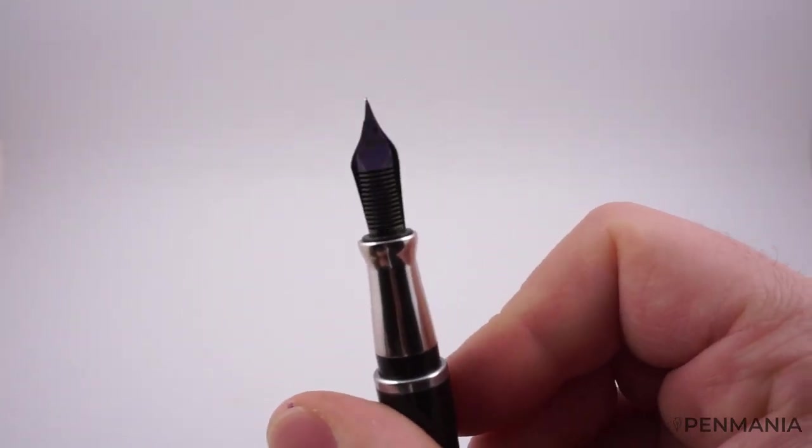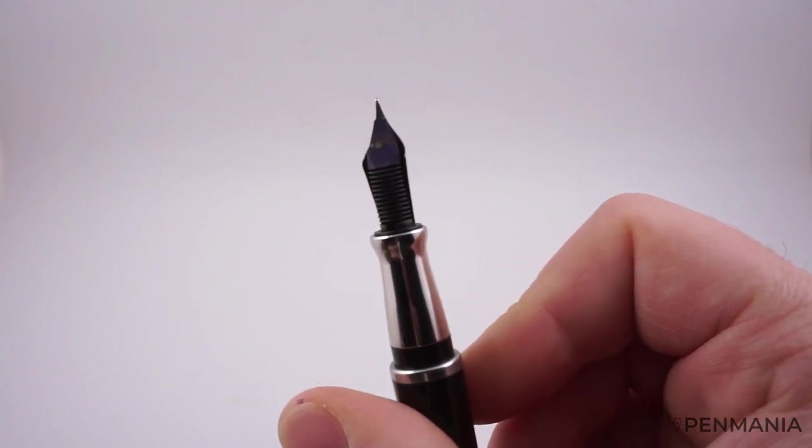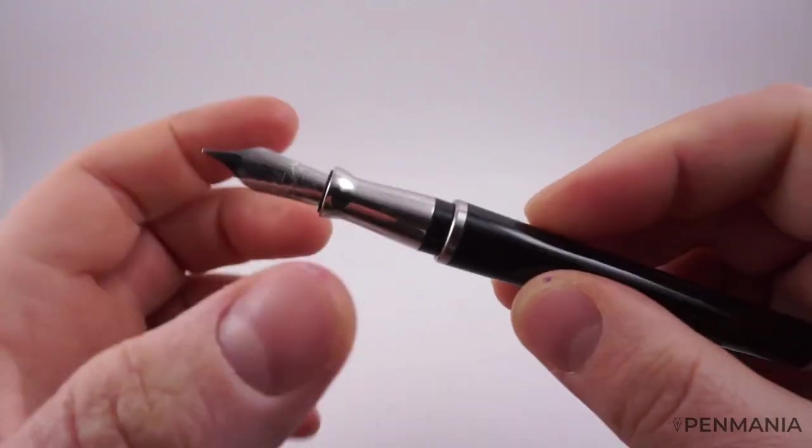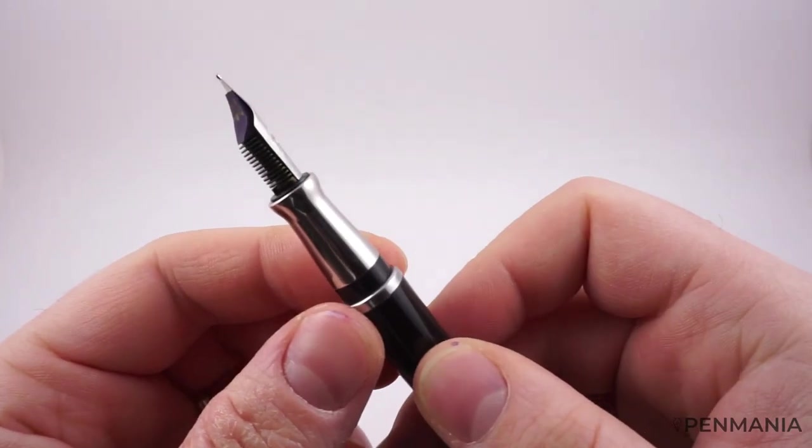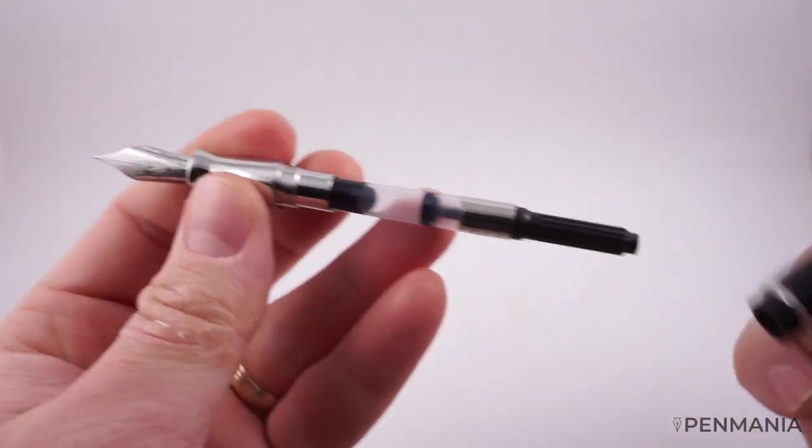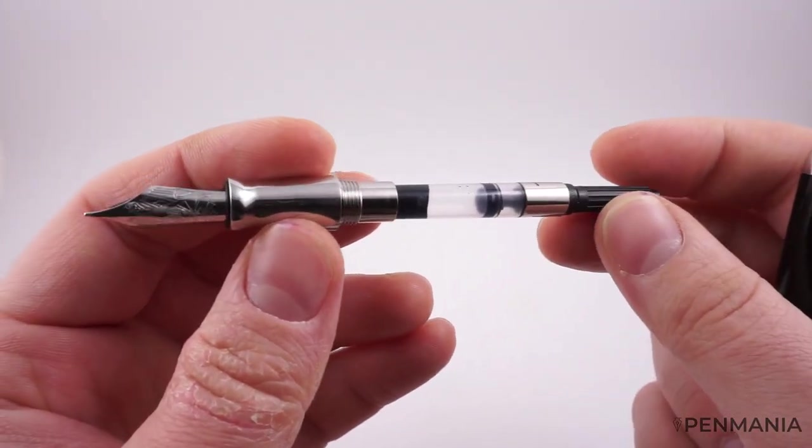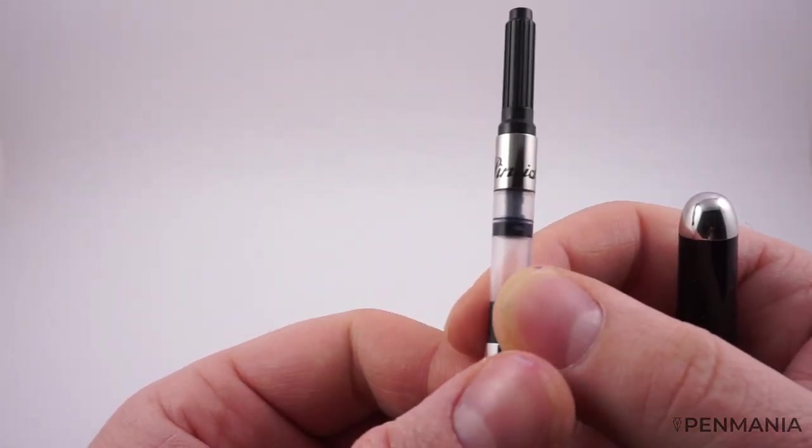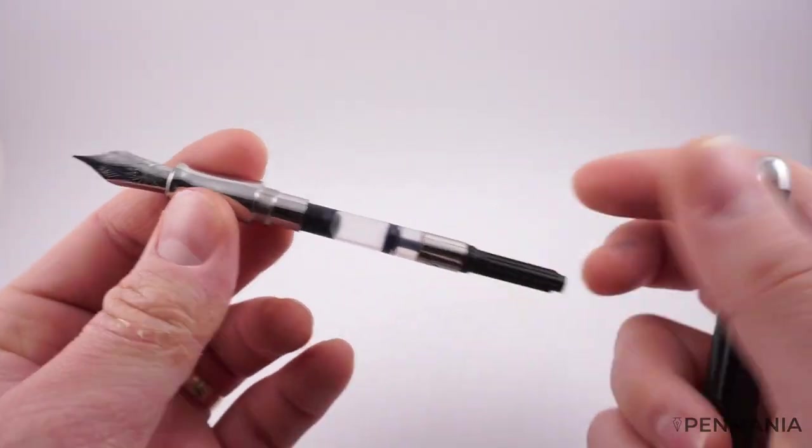We have the standard Bock unit nib, plastic feed as you can see. The whole nib unit can be unscrewed from the section easily, no issues here. The fountain pen works with standard international converter or cartridges. A converter with Pinaider on it is included, which is a nice touch.